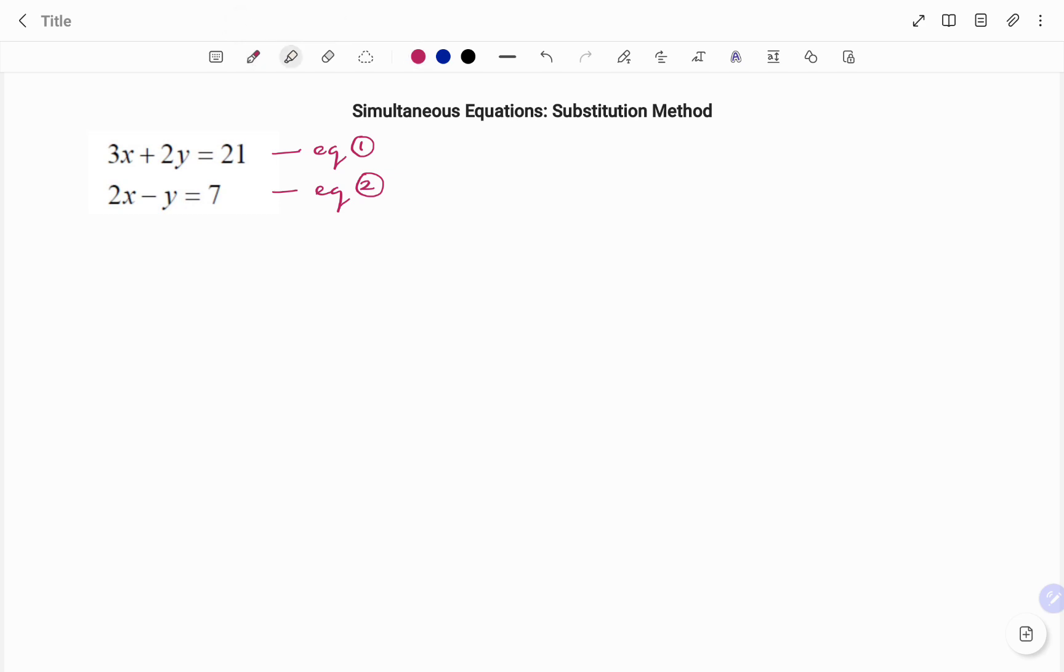Like I did earlier, to make my work easy, I'm going to pick the variable that has 1 as its coefficient. And in this case, that is y. So, therefore, from equation 2, I have that as 2x minus y equals 7.